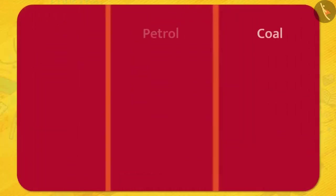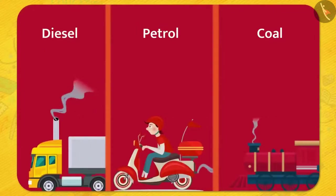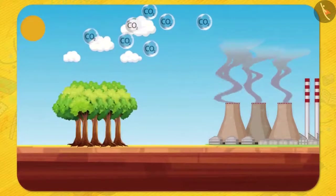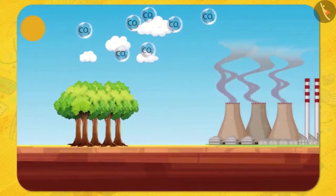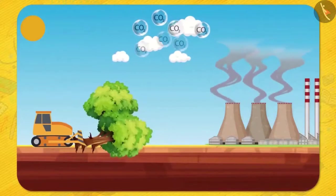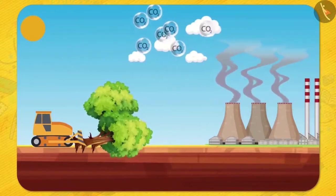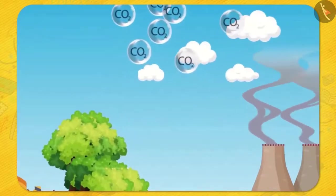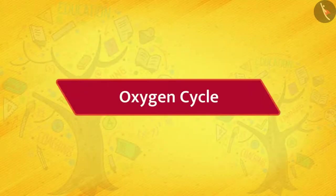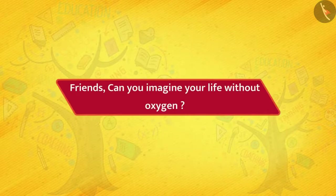Human activities like burning of fossil fuels releases a lot of carbon dioxide in the atmosphere, and the main job of absorbing this carbon dioxide is done by the trees. But humans are cutting down the trees as well, which leads to the increase of carbon dioxide in the atmosphere, causing global warming. Oxygen cycle. Friends, can you imagine your life without oxygen?